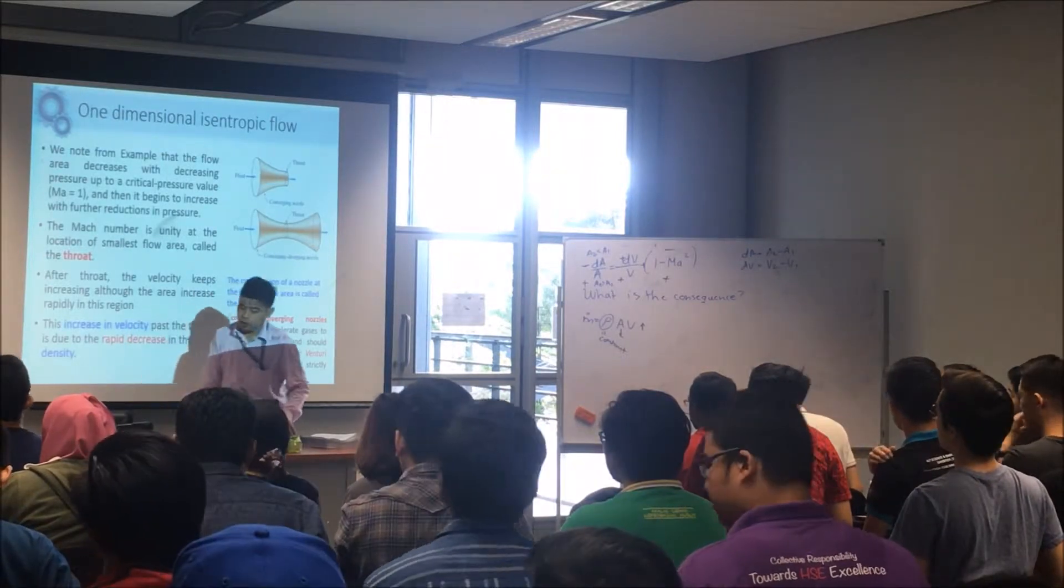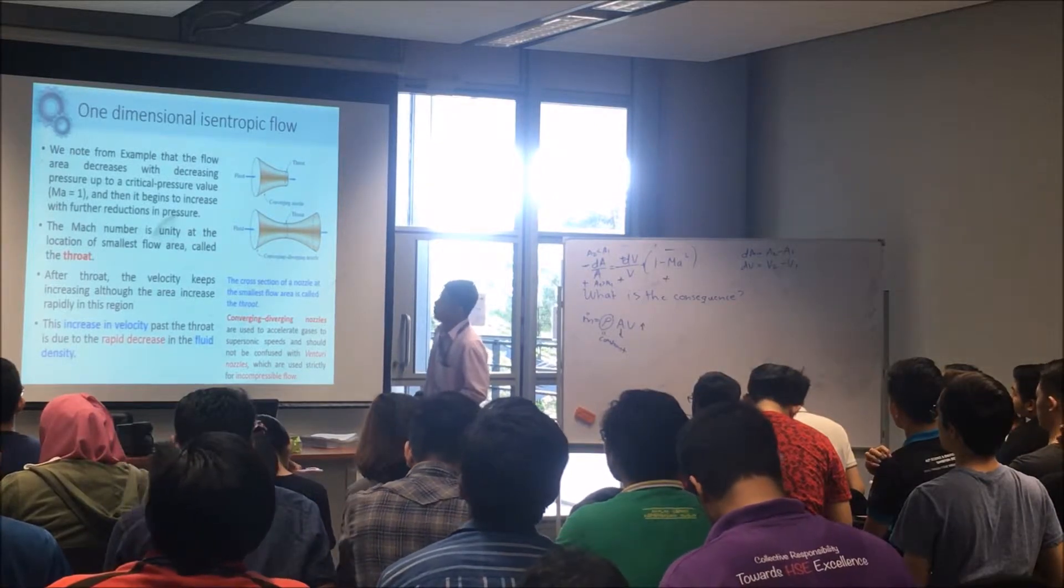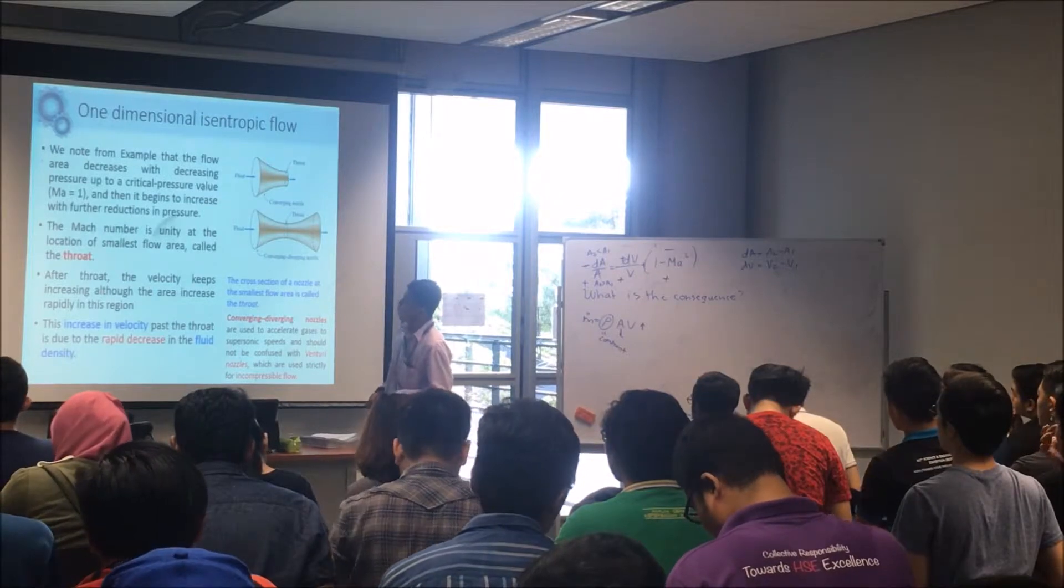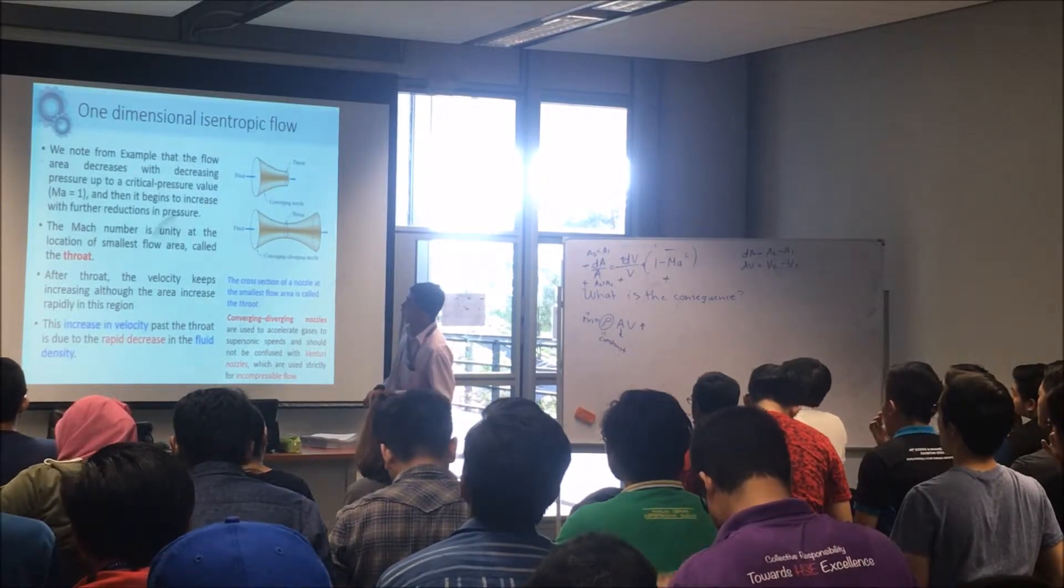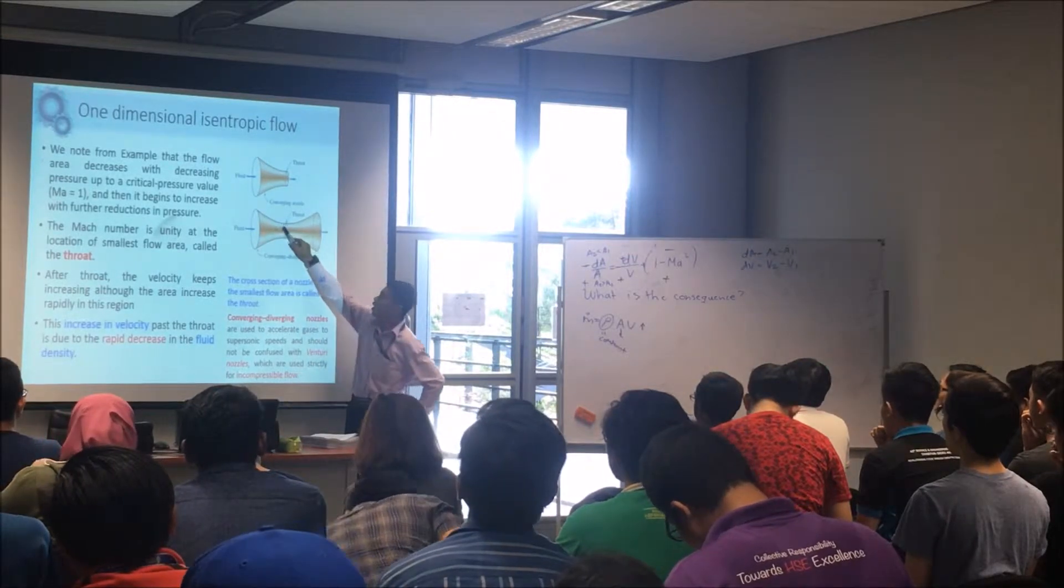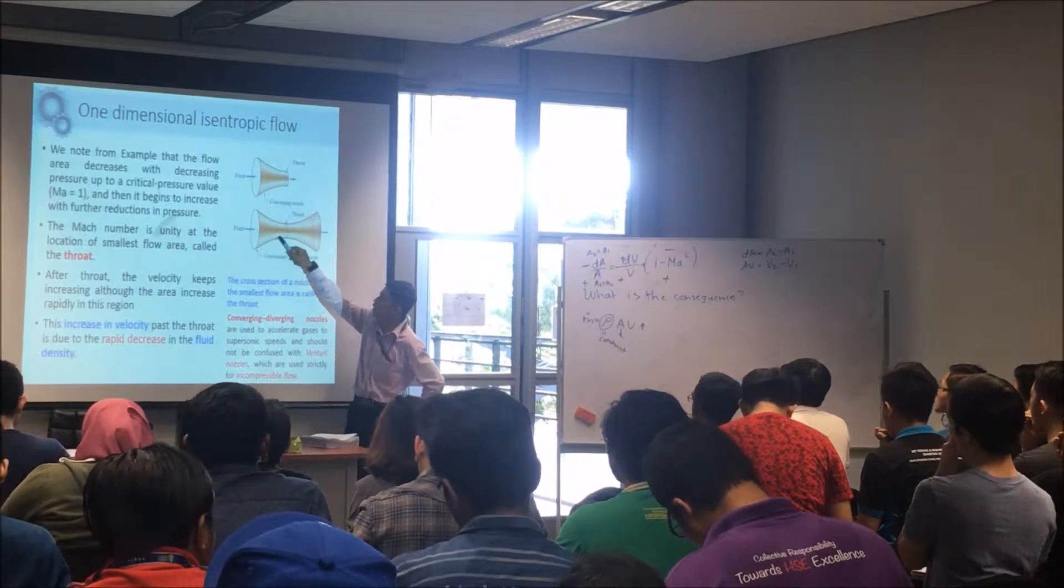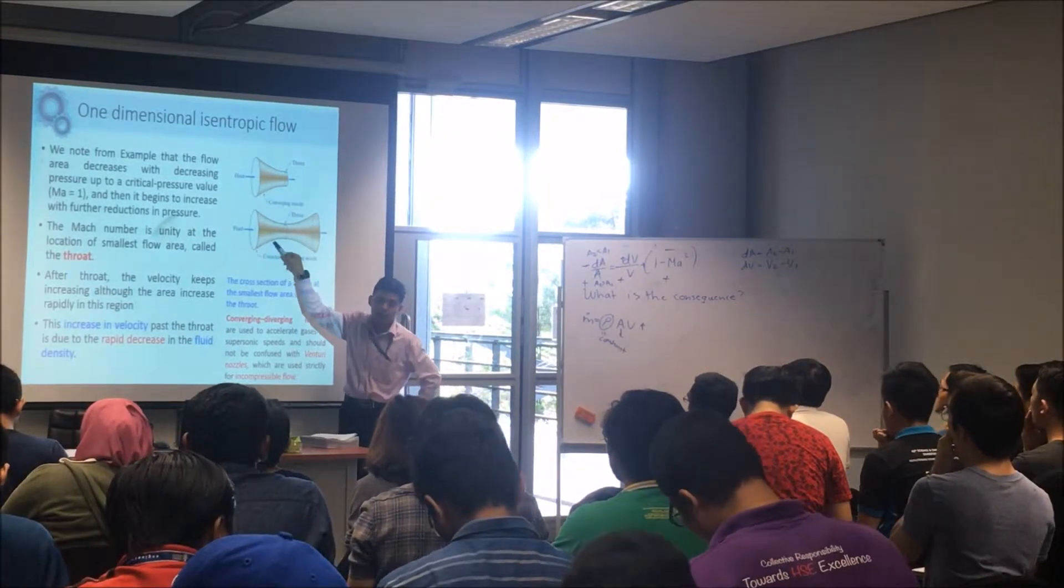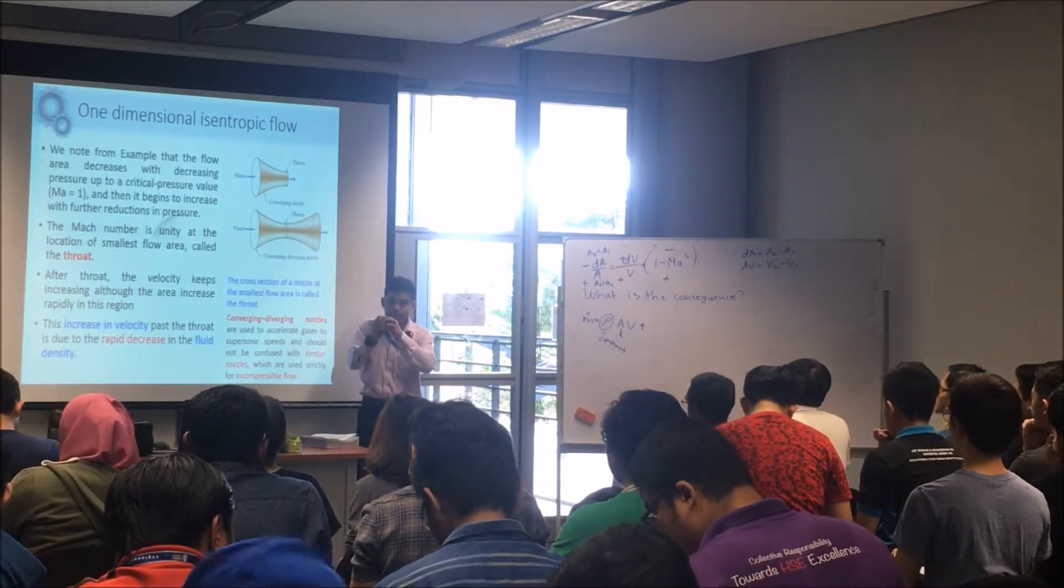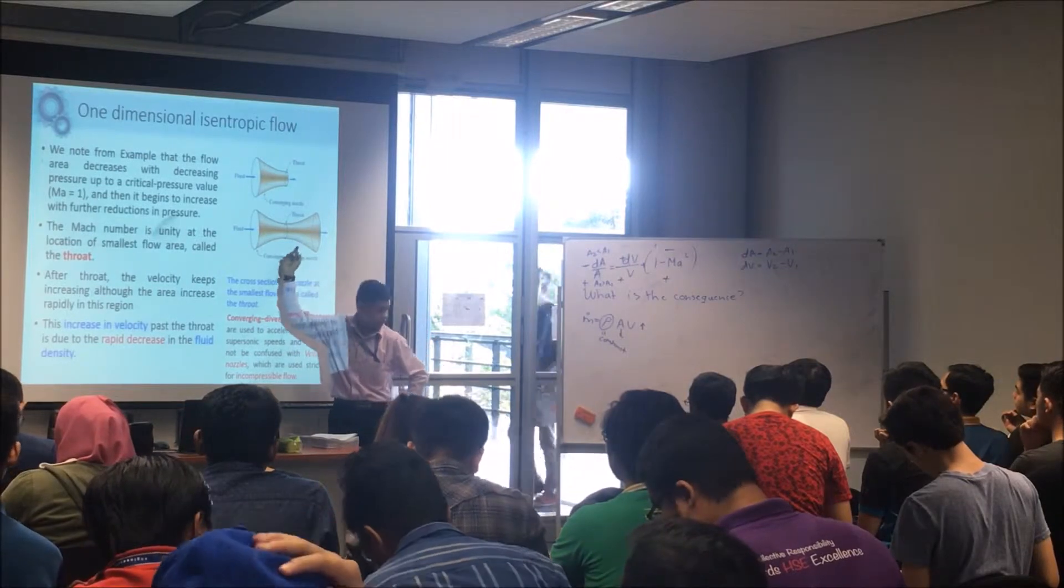Now, if you look at this, we know that with the decreasing in pressure, the velocity starts to increase until it reaches the critical condition here at the throat. The smallest area in the converging-diverging nozzle is called a throat. So when I say throat, it means it is the lowest area of the converging-diverging nozzle.